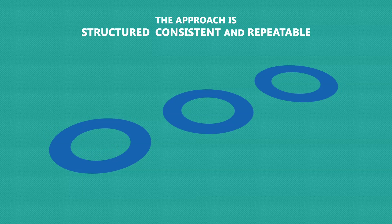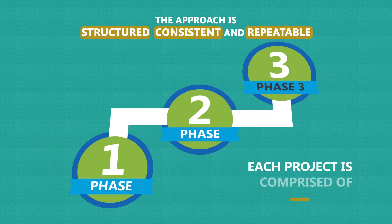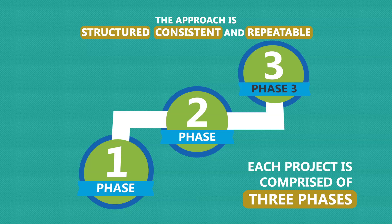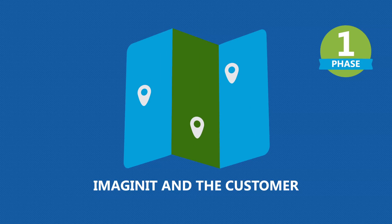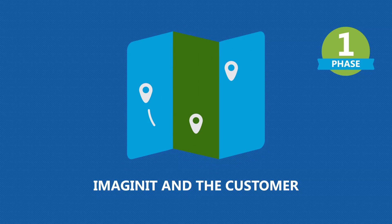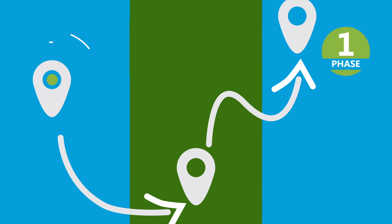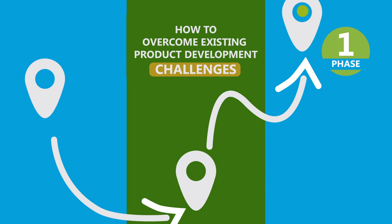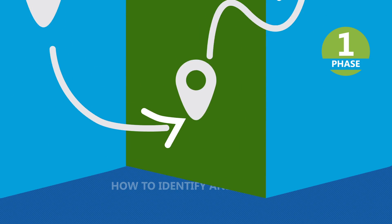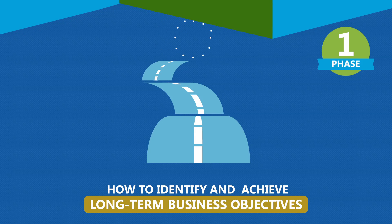The approach is structured, consistent, and repeatable. Each project is comprised of three phases. Phase 1: During the initial phase, Imaginate and the customer discuss how to overcome existing product development challenges. They also consider how to identify and achieve long-term business objectives.